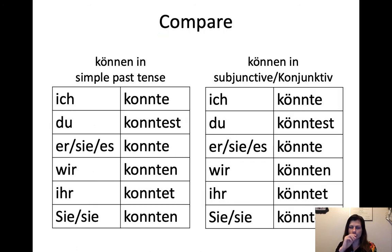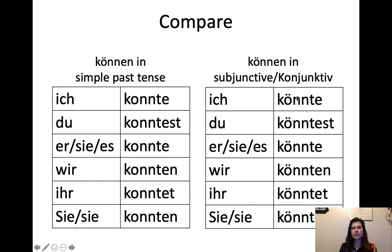Let's compare the simple past of können with the Konjunktiv. Simple past: ich konnte — I was able to, du konntest, er/sie/es konnte, wir konnten, ihr konntet, sie konnten. In the Konjunktiv, we add the umlaut: konnte → könnte. Ich könnte — I would be able to. Du könntest — you would be able to. Er/sie/es könnte, wir könnten, ihr könntet, sie könnten. The only difference is the umlaut, which shifts meaning from real past to hypothetical subjunctive.